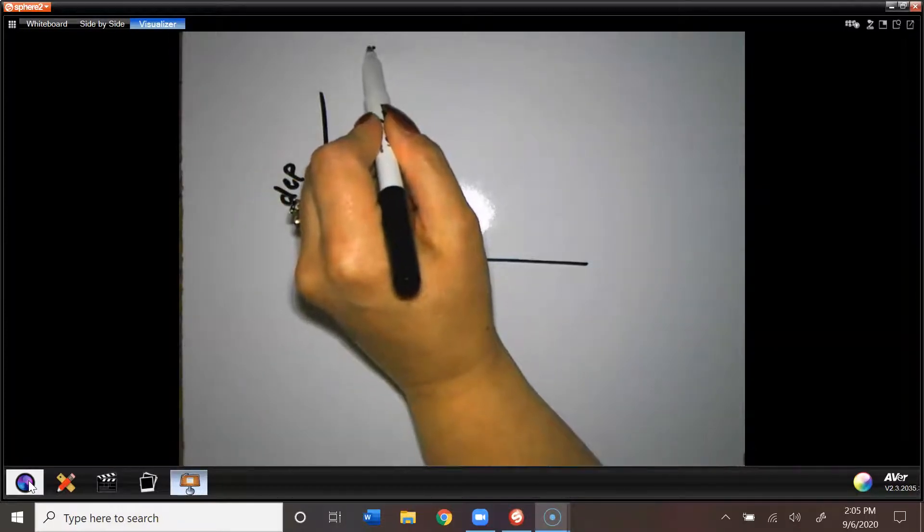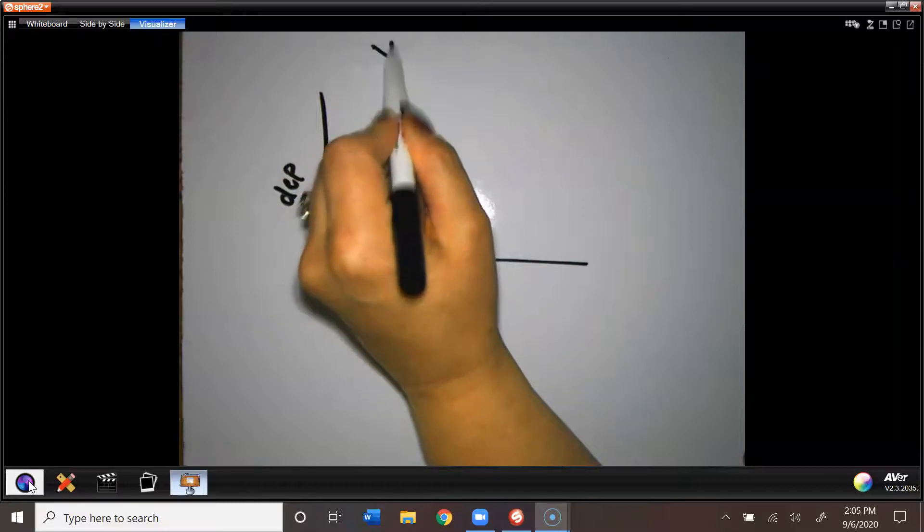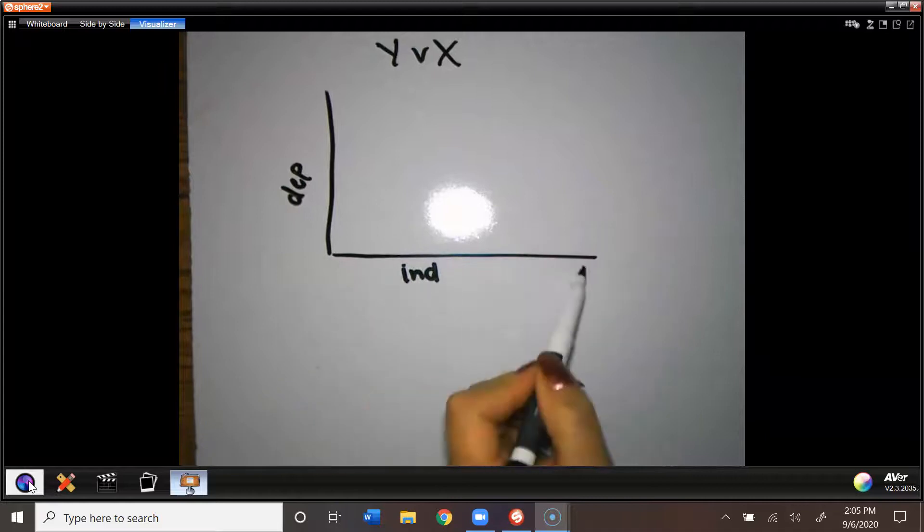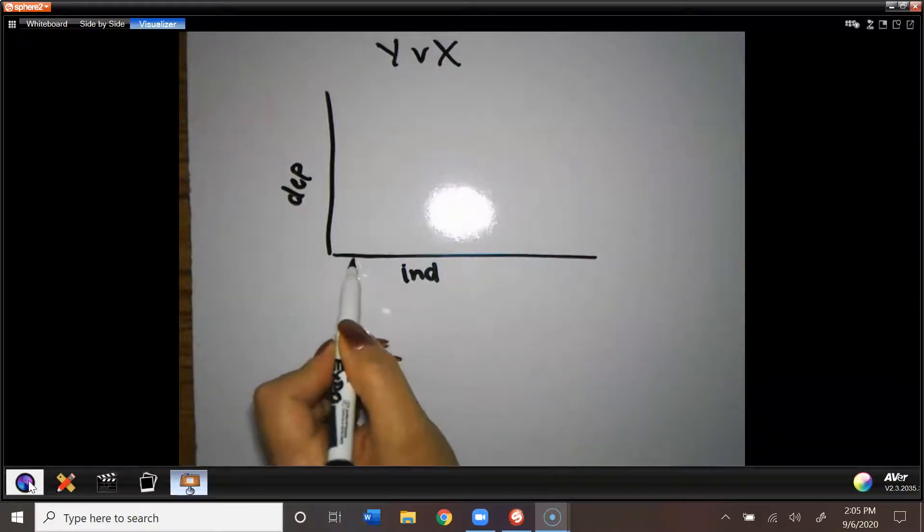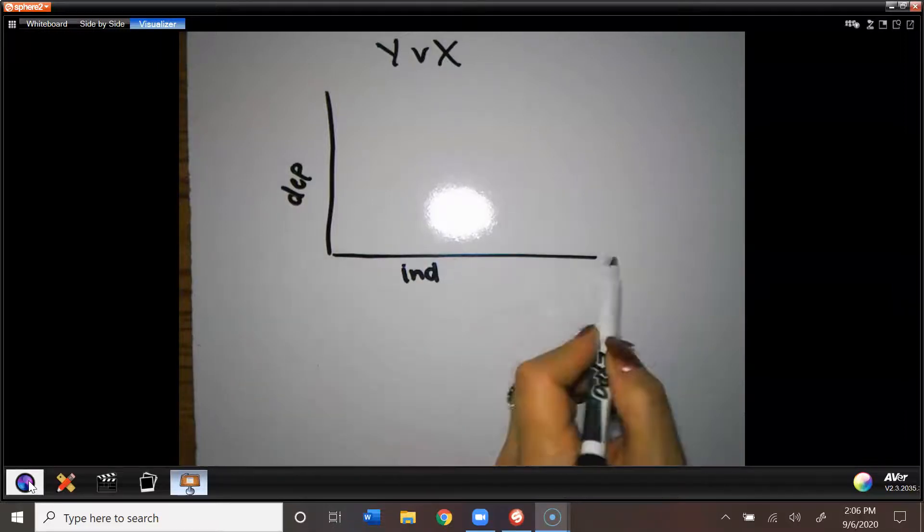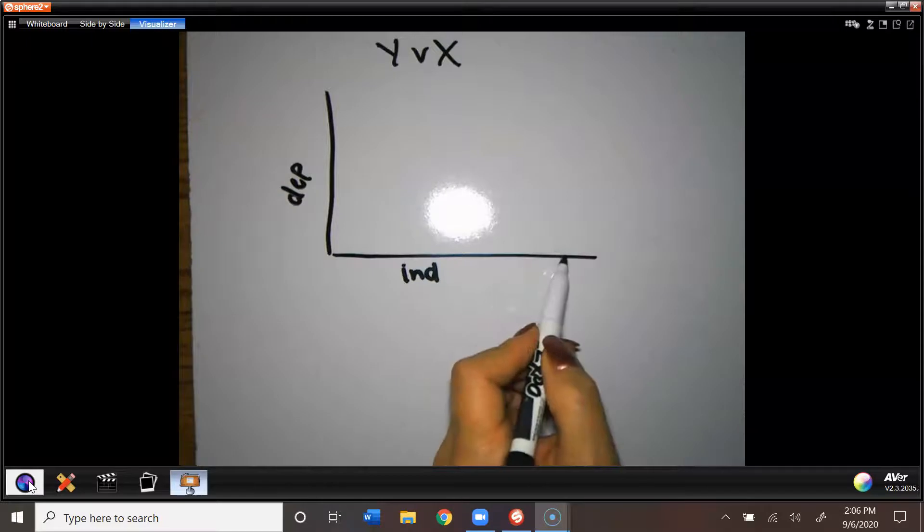The title is always going to be y versus x, so it's always going to be the dependent versus the independent in your title. You want to make sure that your axes are evenly graduated, so if every line is five or every line is two or whatever it is, as long as it's the same all the way across, that's all that matters.